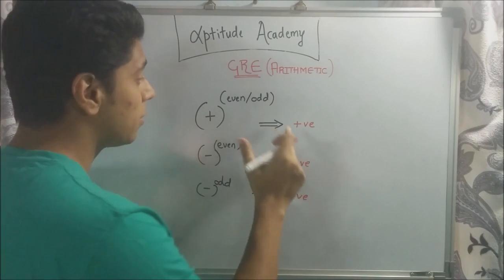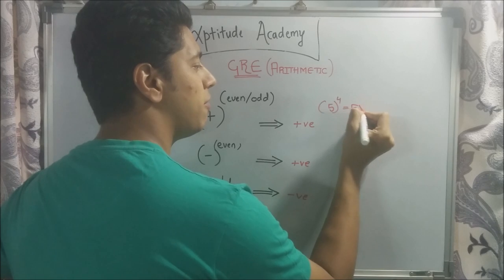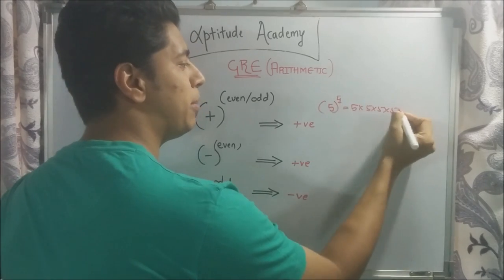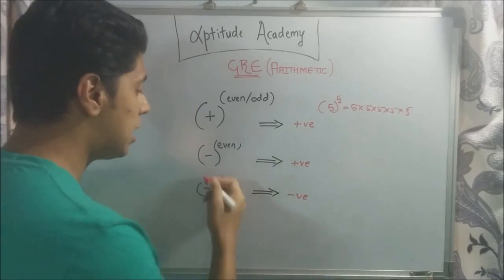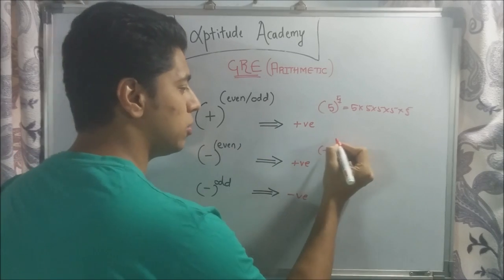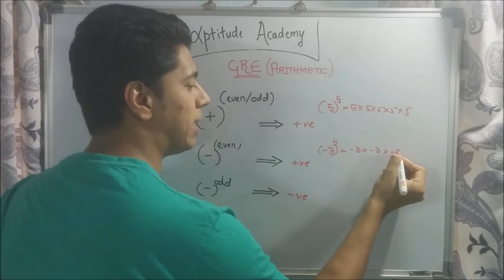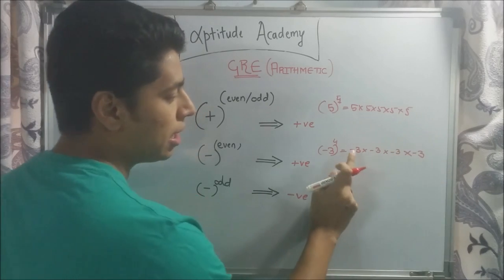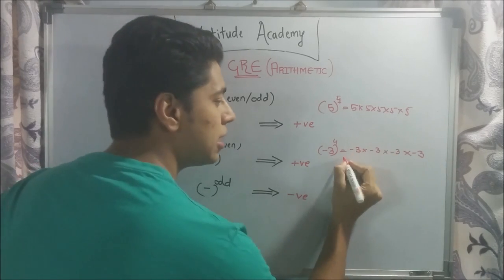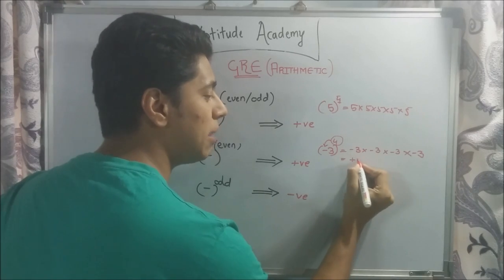Because for a positive number like 5 raised to 4, it's 5 into 5 into 5 into 5 — doesn't matter. Suppose you have a negative number, minus 3, raised to an even power, say 4. So minus 3 into minus 3 into minus 3 into minus 3. Minus into minus is plus, plus into minus is minus, minus into minus is plus. So an even power for a negative number will always result in a positive number.